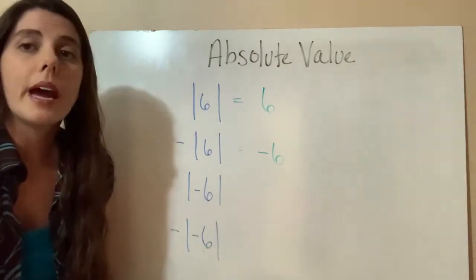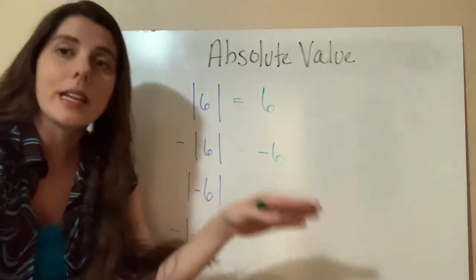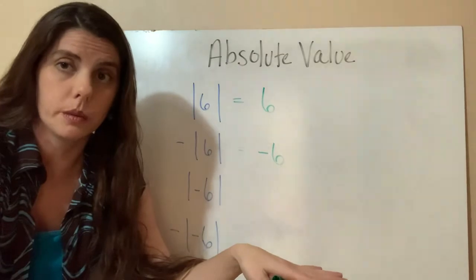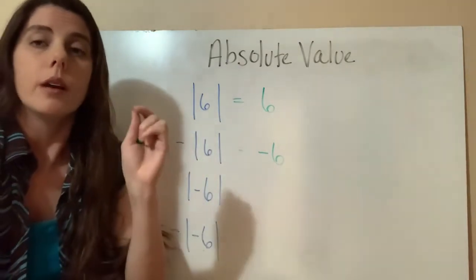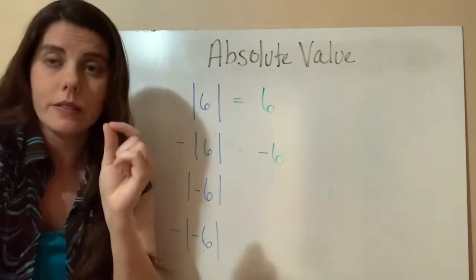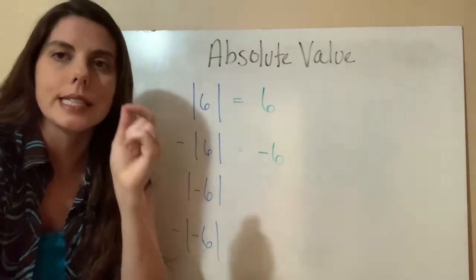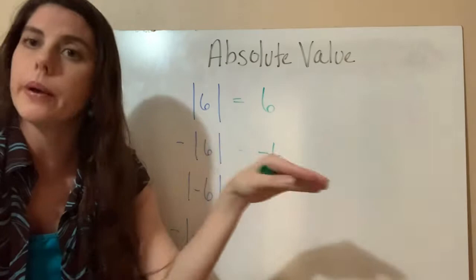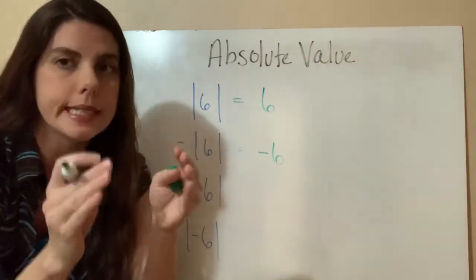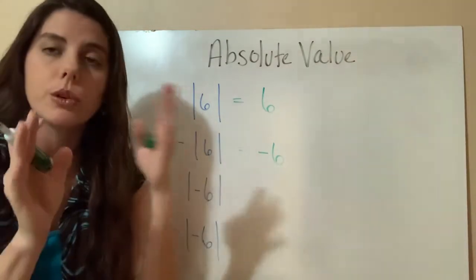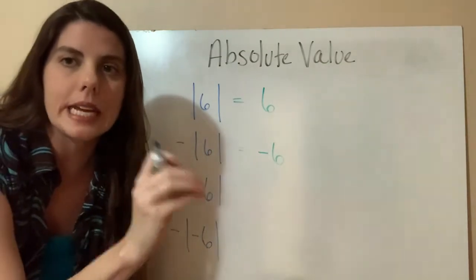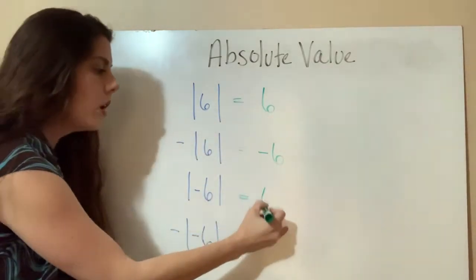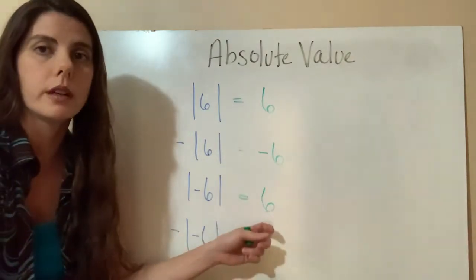In our third example, we have the absolute value of negative six. This time the negative is inside the absolute value symbol. So we're looking at that integer, negative six — how far is negative six from zero? Remember, we're not worrying about direction, just distance. It doesn't matter if we're going left or right; how far is negative six from zero? Negative six is also just six units away from zero.